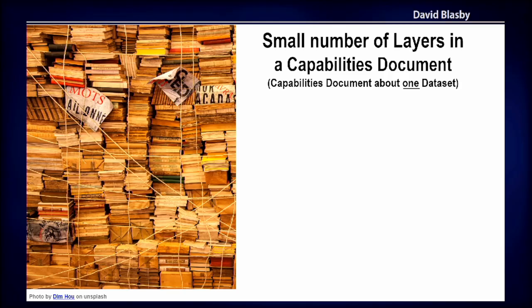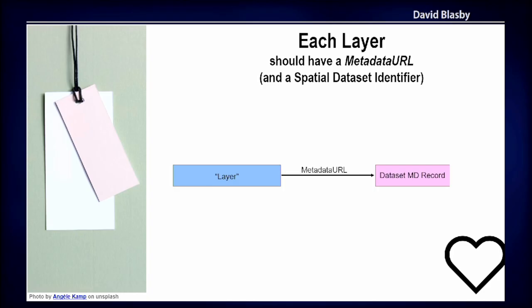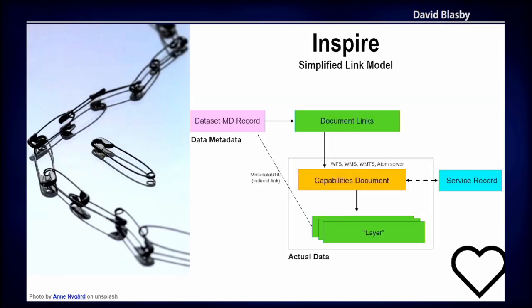In capabilities, for each of the layers, make sure there is a metadata URL link to the dataset metadata record — everyone will love you, seriously. If those links aren't there, people are probably just going to Google your layer name from your WMS and then give up. That metadata URL link on each layer is really user friendly and makes things much easier. You don't want to have to do all that processing and searching we talked about before, so when you use the INSPIRE simplified link model it's easy and obvious connections.